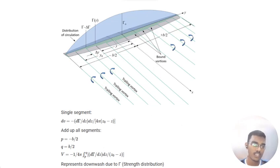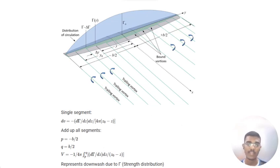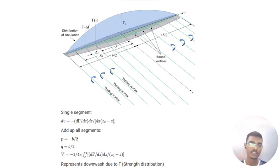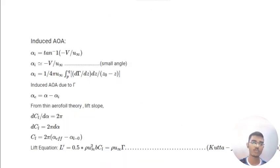For a single segment, dv is equal to minus d-gamma by dz times dz, divided by 4 pi times (z-naught minus z). Adding up all these segments, with the limit p equal to minus b/2 and q equal to plus b/2, v becomes minus 1 over 4 pi, integrated from p to q, of (d-gamma/dz) dz divided by (z minus z). This represents the downwash due to gamma, the strength distribution.